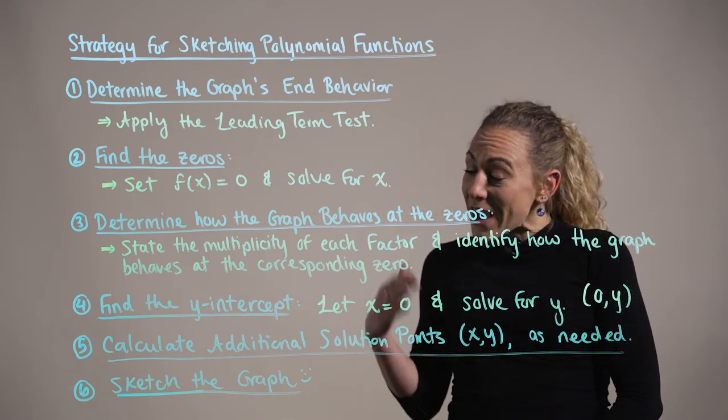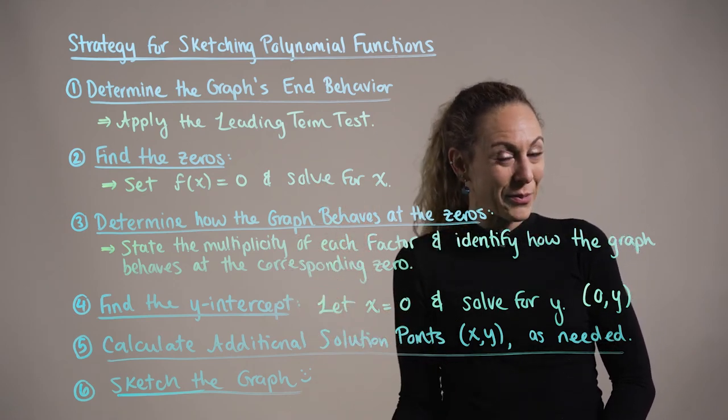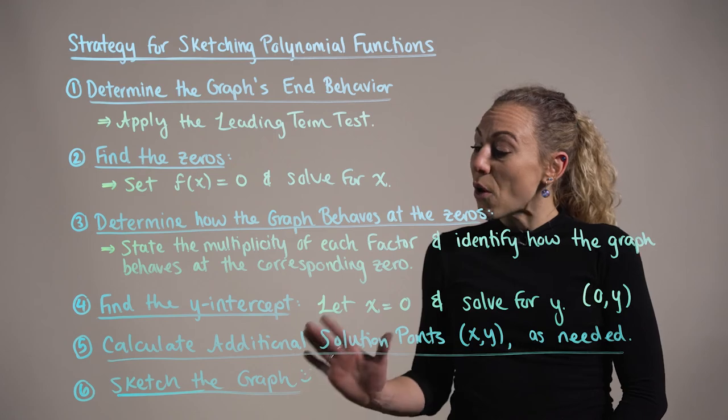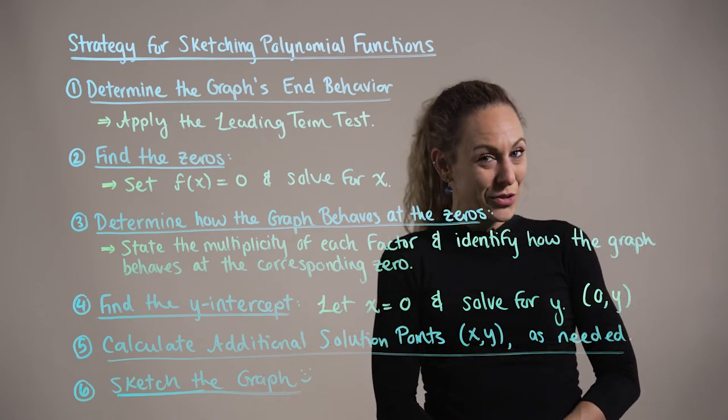Now, as always, if after taking all of these steps you're still not quite sure what the graph of the polynomial function will look like, you can always go back to your table of x and y values and find additional solution points on the graph.